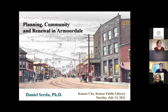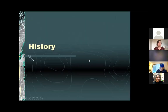Today is the 70th anniversary of the 1951 flood, which devastated not only Armordale but most of Kansas City. It disrupted and dislocated tens of thousands of people and caused over a billion dollars in damages. That's not going to be the primary topic of my discussion today, though. What I really want to talk about is Armordale itself — its history and how to think about its history.